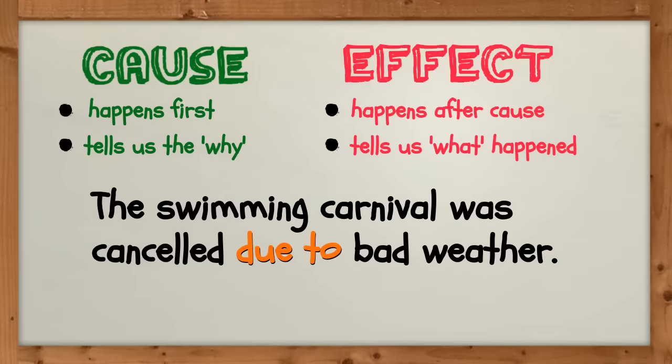How did you go? The cause is the bad weather because it was the event that happened first and it tells us the why. The effect is the swimming carnival being cancelled because it happened after the cause and it tells us what happened.